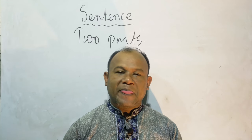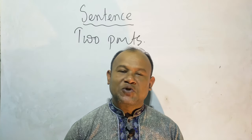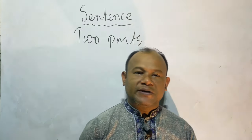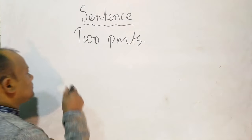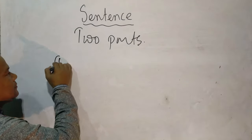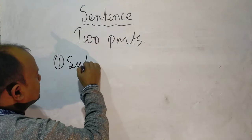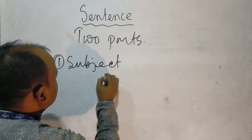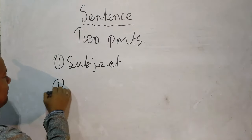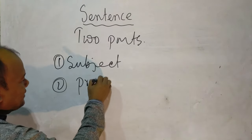A complete sentence has two parts: number one, subject; and number two, predicate.